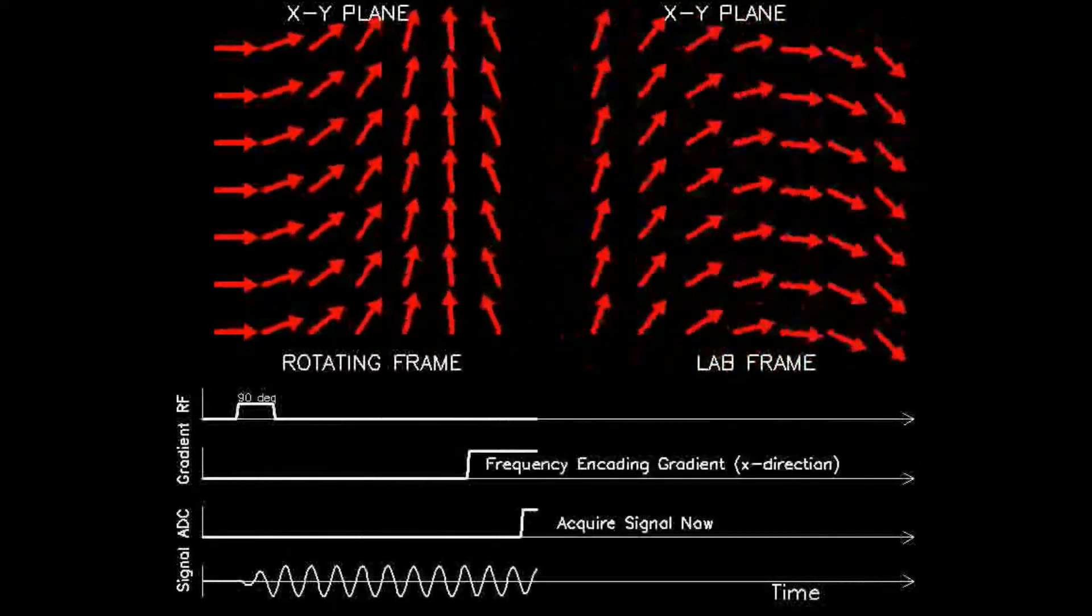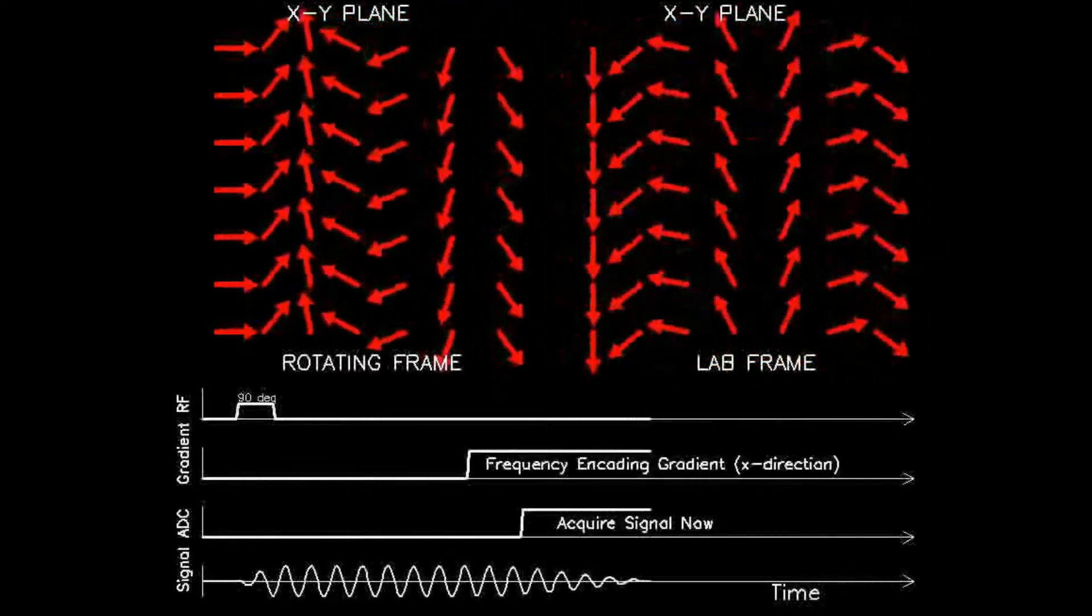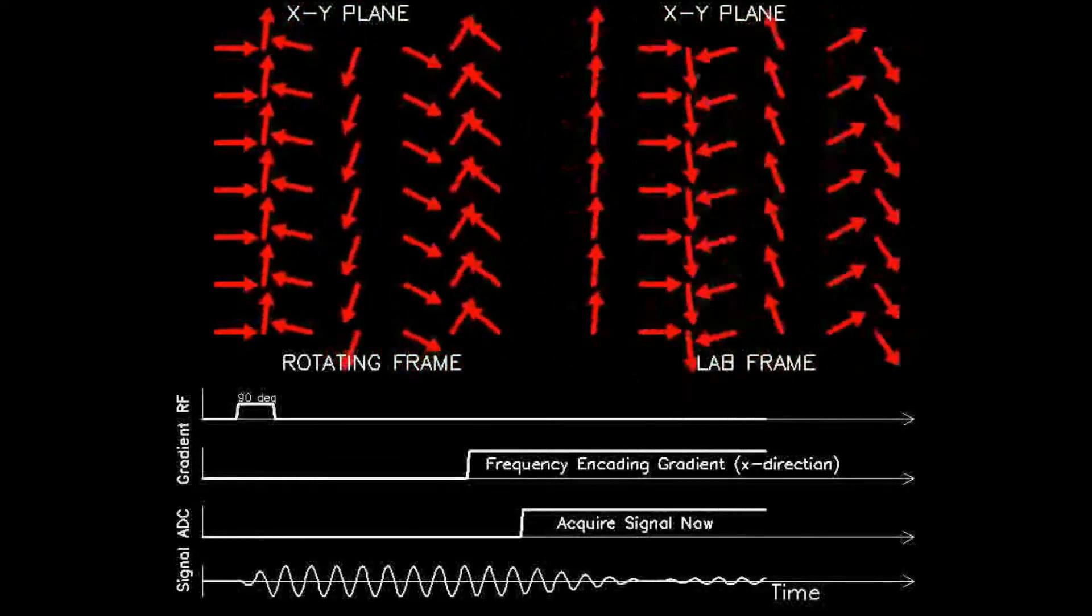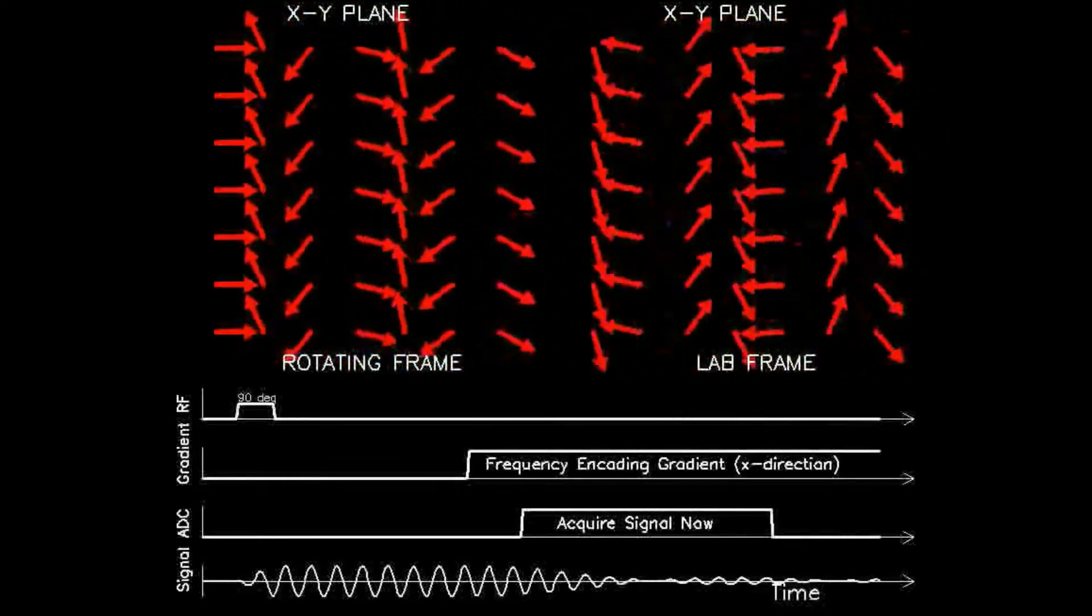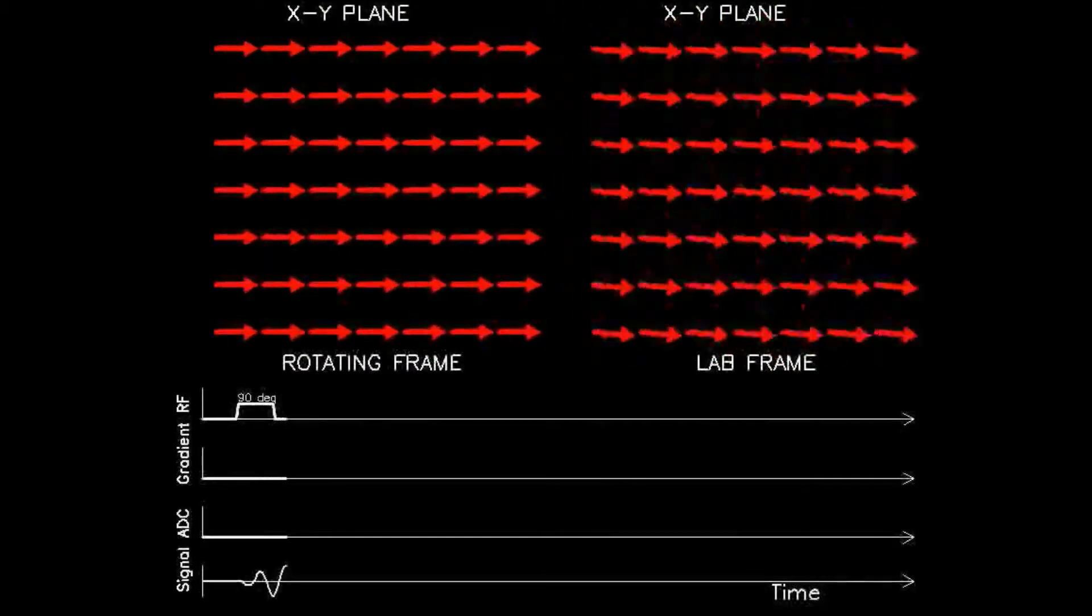Then, in effect, the x-axis location of each spin becomes encoded by its new adjusted frequency. That is, all spins along a column are frequency encoded.